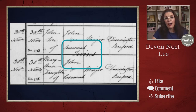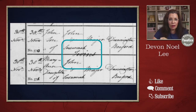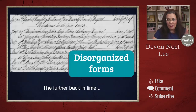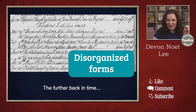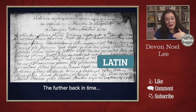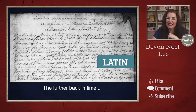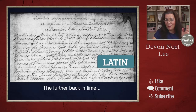The more modern the baptism, the more pre-printed and organized the form will be. The further back in time you go, the more disorganized the records are going to be. And going even further back, you're going to bump into Latin — so make sure you learn your Latin if you're going to be searching for your English relatives. This one here is from 1700.